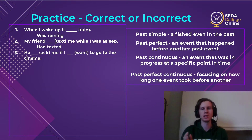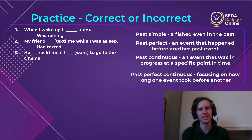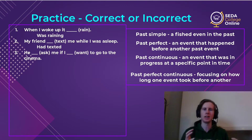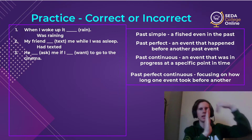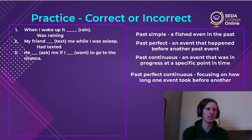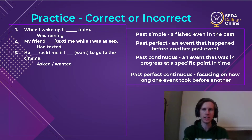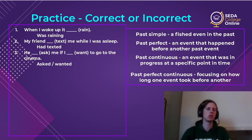So far the story is: 'When I woke up, it was raining. My friend had texted me while I was asleep.' The third sentence: 'He ___ me if I ___ to go to the cinema.' The correct answer is past simple, past simple: 'He asked me if I wanted to go to the cinema.' Now it's just two events moving forward — no other relationships. We move to the next point in the past with past simple.